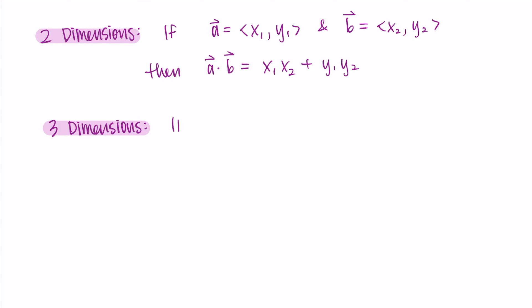Three dimensions look similar. If we have a vector a that's x1 y1 z1 and b is x2 y2 z2, then their dot product looks like x1 times x2 plus y1 times y2 plus z1 times z2. So it's just the product of each of the components added together.